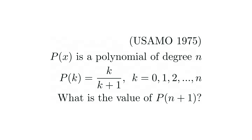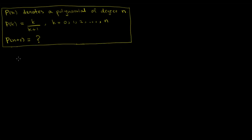This is a problem from the USA Math Olympiad. P(x) is a polynomial of degree n, and it is known that P(k) = k/(k+1) for k = 0, 1, 2, up to n. We must find the value of the polynomial at x = n+1. So P is a polynomial of degree n, we have P(k) = k/(k+1) — how can we find P(n+1)?